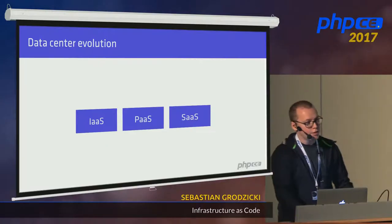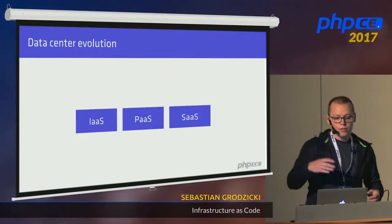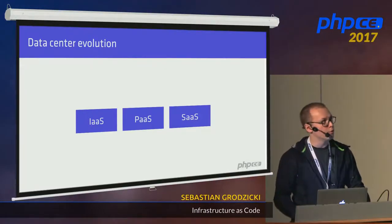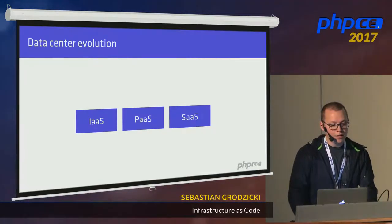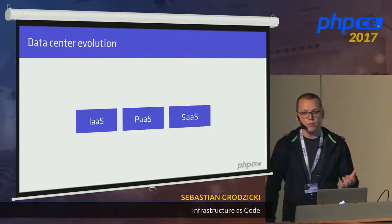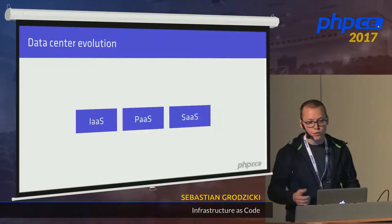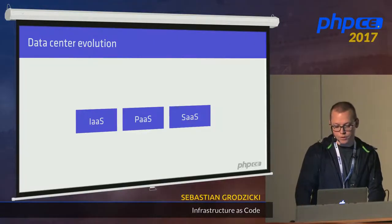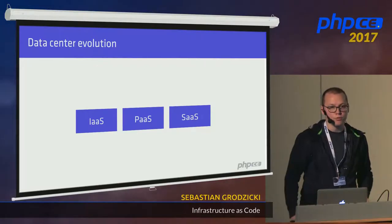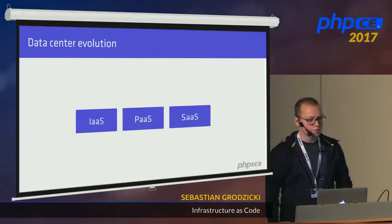To summarize these movements: we have Infrastructure as a Service, for example AWS or Google Cloud, which gives you CPU, disk, and network resources. Then Platform as a Service like Google App Engine, where you give your application and they handle the database and running it. And then Software as a Service like G Suite or GitHub - the end-to-end solution.